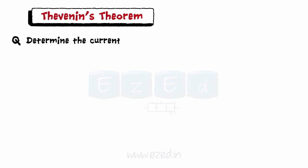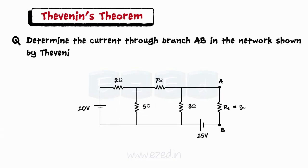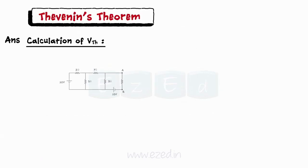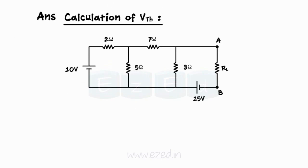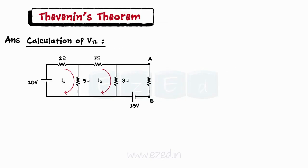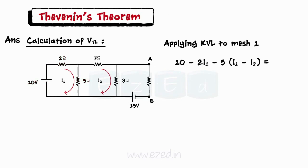Consider an example: determine the current through branch AB in the network shown by Thevenin's Theorem. As we need to find the current through branch AB, that resistor acts as a load. Thevenin's voltage is observed across the load terminals, so we remove the load resistance and calculate Vth across AB using KVL. Applying KVL to mesh 1, we get the equation 7I1 minus 5I2 equals 10.